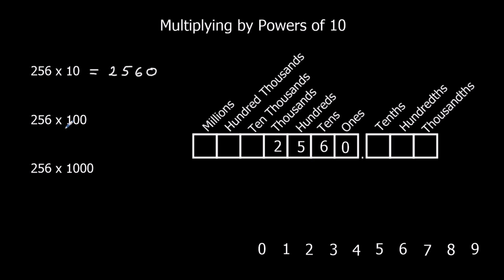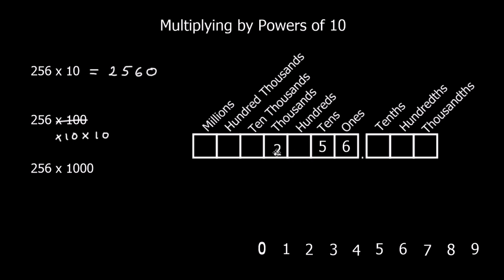Now we're going to look at 256 multiplied by 100. We start with 256 — 2 in the hundreds column, 5 in the tens, and 6 ones. Multiplying by 100 is the same as multiplying by 10 twice. So every time we multiply by 10 we move the numbers up to the next column, and we're going to move them up two columns.